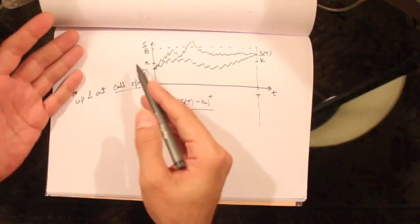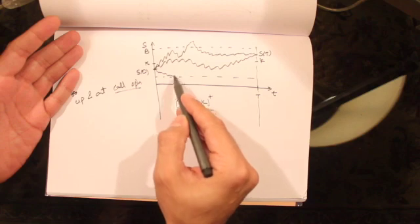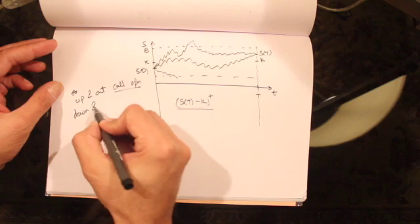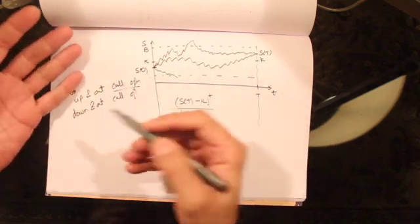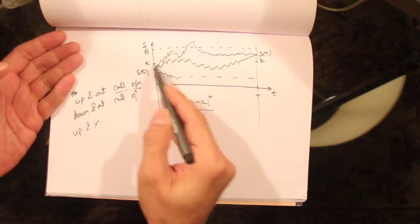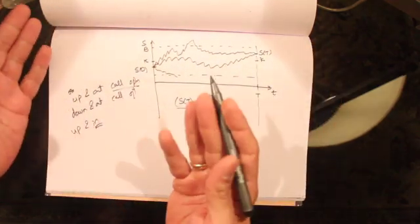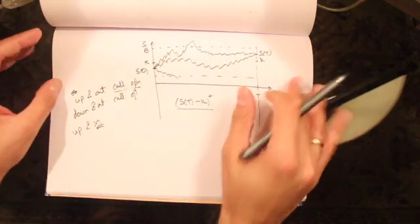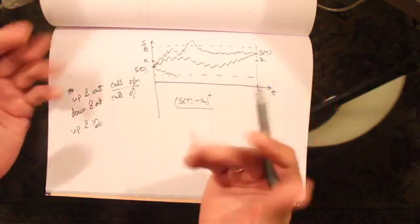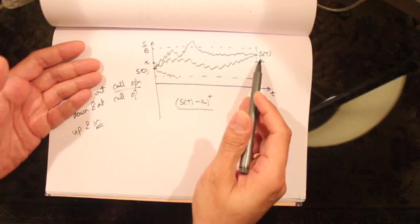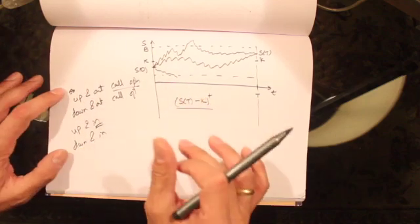There are many variations of barrier options. You can have a barrier below the stock price — the stock has to go below the barrier to get knocked out — called a down-and-out call option, which is also path dependent. Another variation is up-and-in: initially the option is not live and the stock has to go above the barrier to get knocked in. If it never crosses the barrier, the option expires worthless. Similarly, we can have down-and-in options as well. So these are various kinds of barrier options.